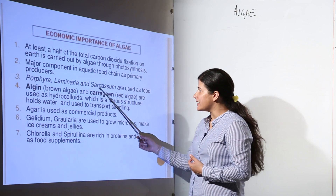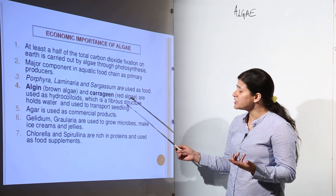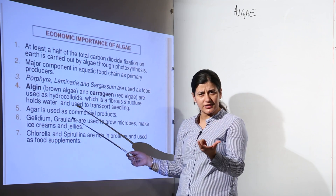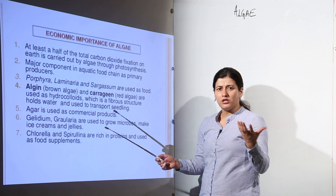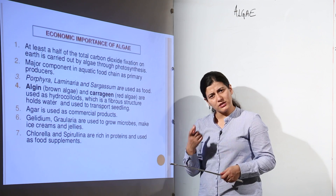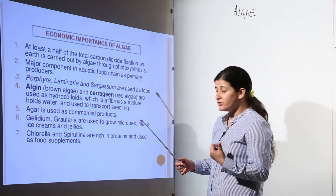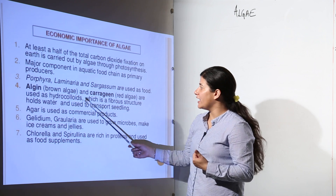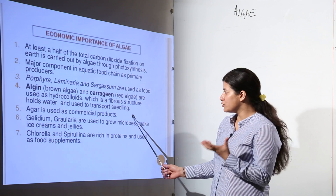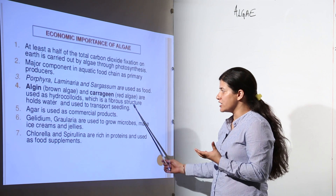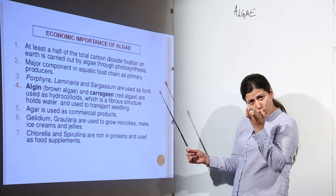Porphyra, Laminaria, and Sargassum are used as food — they are high-energy foods. Spirulina tablets, consumed in developed countries like the US and UK, are basically algae rich in high energy. Algin and carrageen are used as hydrocolloids, which are fibrous structures that hold water and are used for transport of seedlings because they are hygroscopic and can store water.